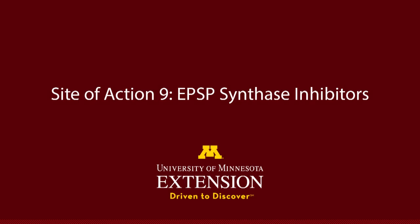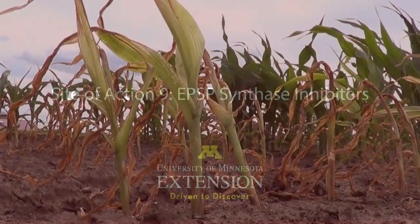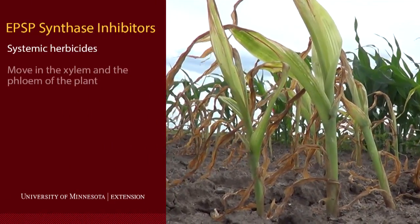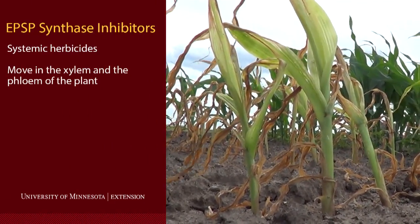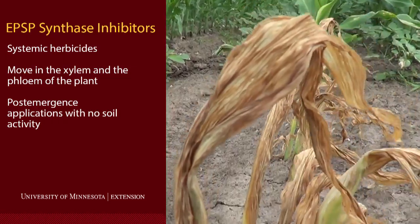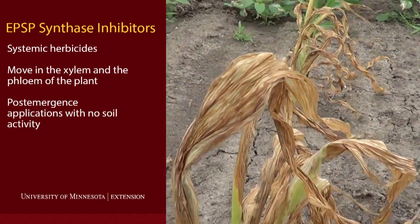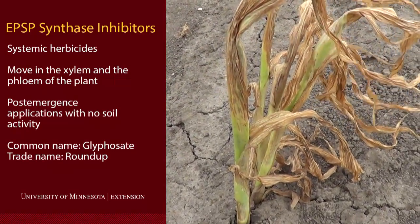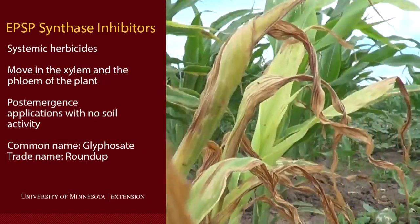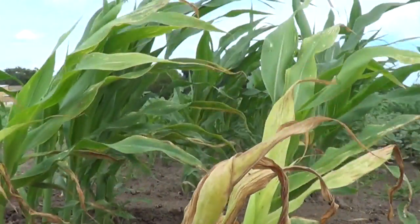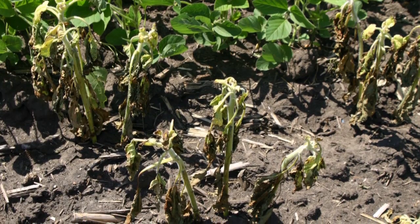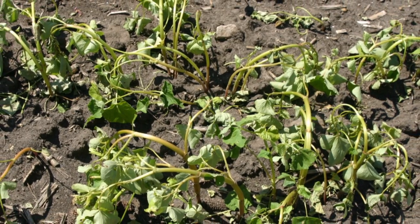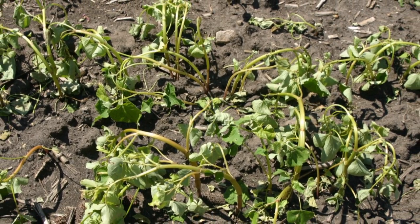Site of action number nine herbicides act on aromatic amino acid synthesis. These herbicides interfere with the EPSP synthase enzyme and can result in injury symptoms to the growing points of plants, resulting in shortening of internodes, death of the growing point, and chlorosis and yellowing of grasses and broadleaf plants.